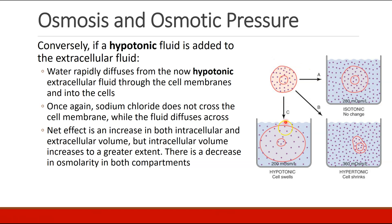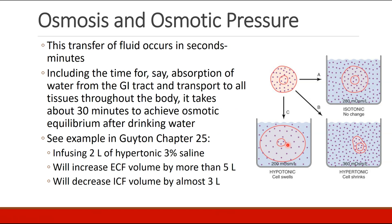Suppose instead we take our cell and put it into a hypotonic fluid — a fluid with relatively low osmolarity. Water rapidly diffuses from the hypotonic extracellular fluid through the cell membrane and into the cell. Sodium chloride does not cross the membrane to go out; rather, water crosses the membrane to go in. The effect is an increase in both intracellular and extracellular volume, but intracellular volume increases more, and osmolarity decreases. This process occurs pretty quickly — for example, if you drink water, the time for full osmotic equilibrium to occur throughout the body is about 30 minutes.